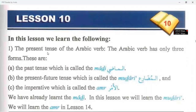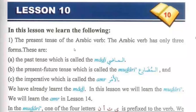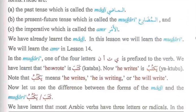In this lesson we learn the following: the present tense of the Arabic verb. The Arabic verb has only three forms. These are the past tense, which is called al-madi; the present-future tense, which is called al-muzari; and the imperative, which is called al-amr. We have already learned the al-madi. In this lesson we will learn the mudari. We will learn the al-amr in lesson 14.